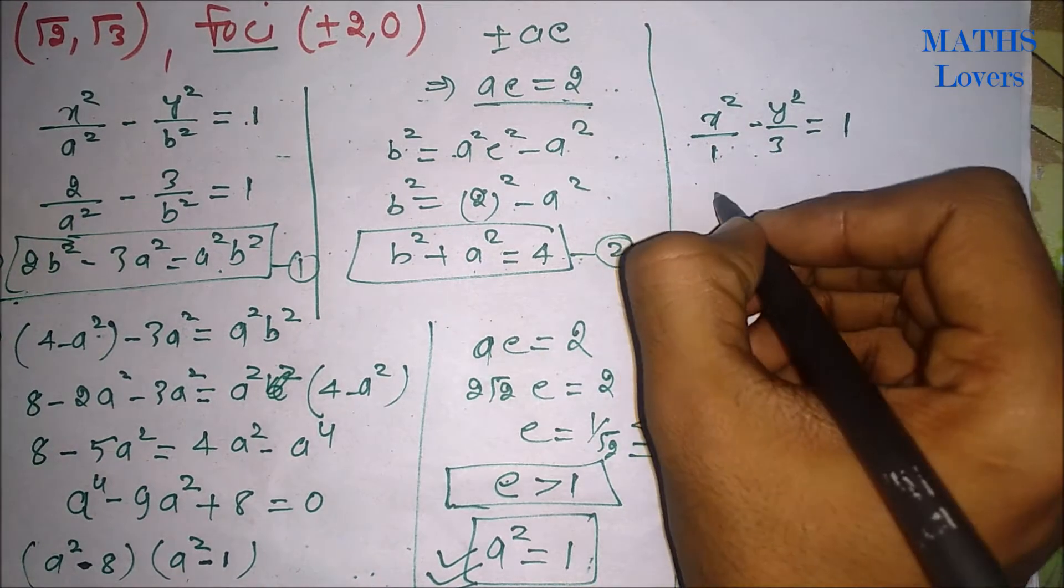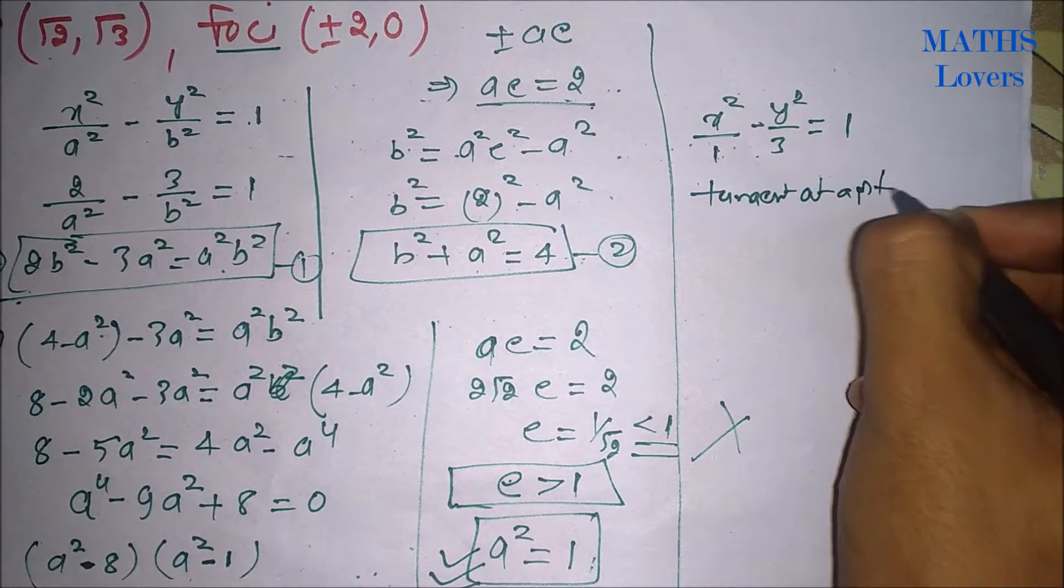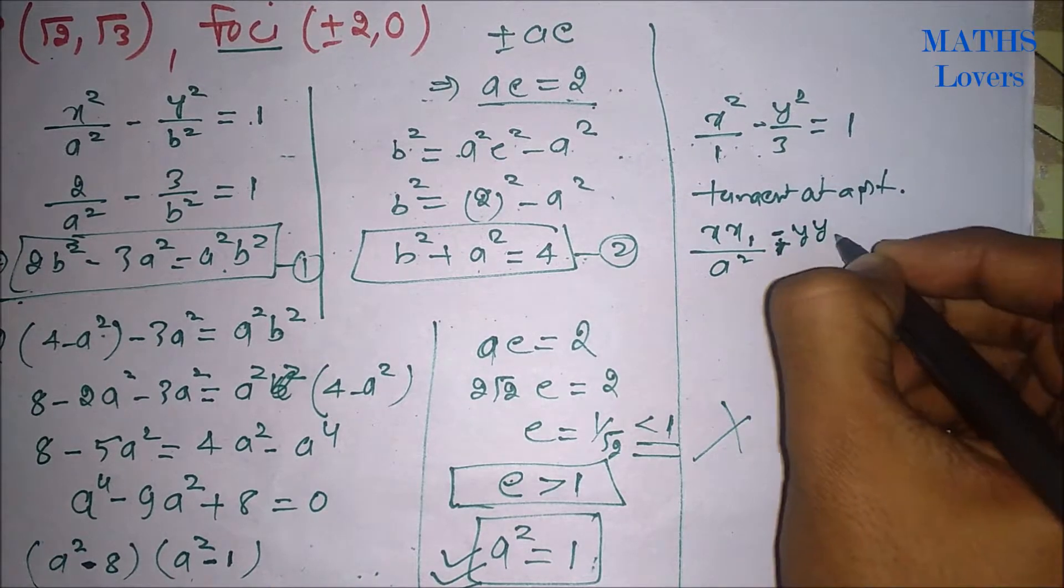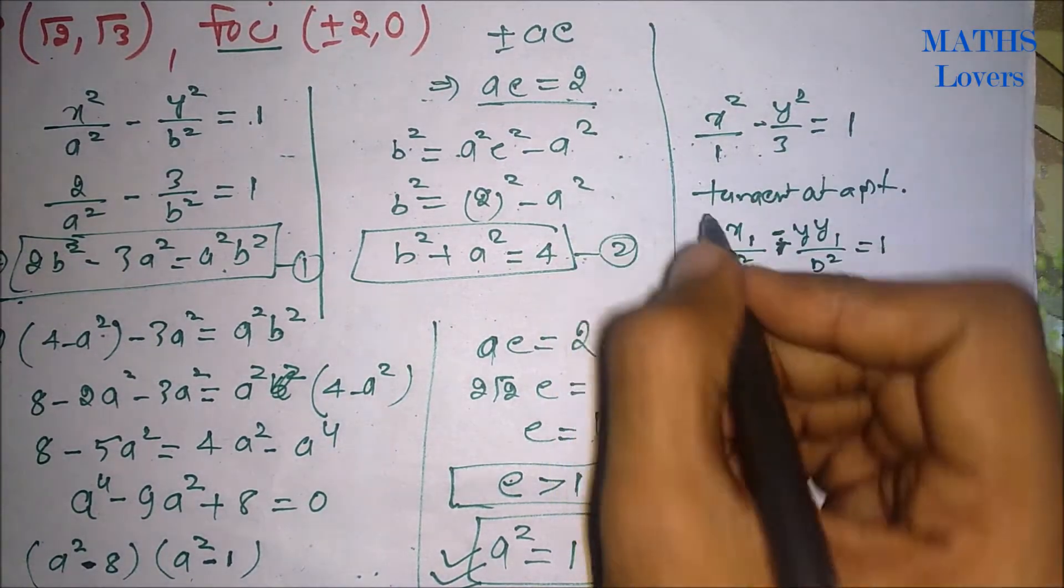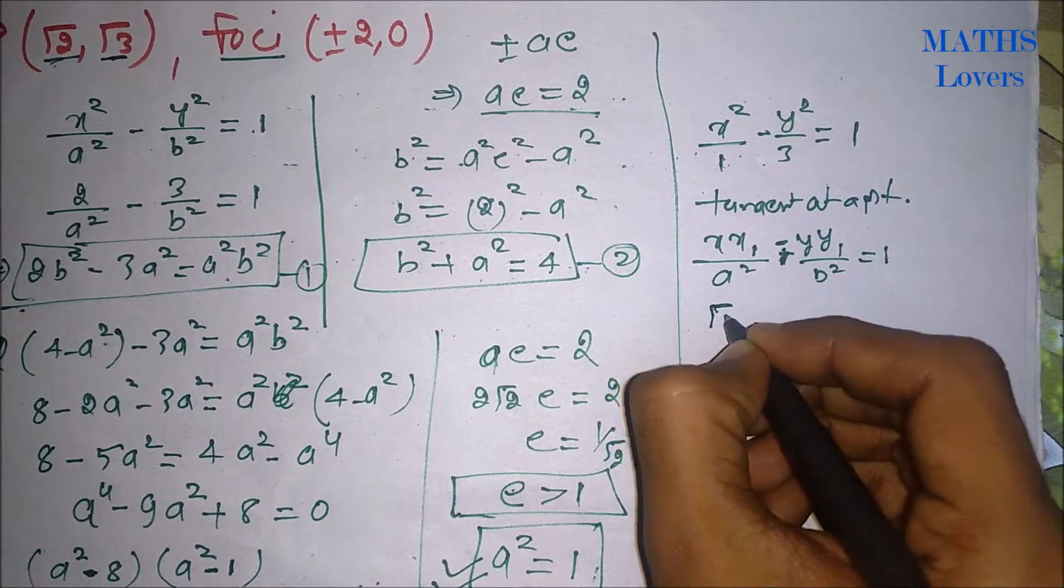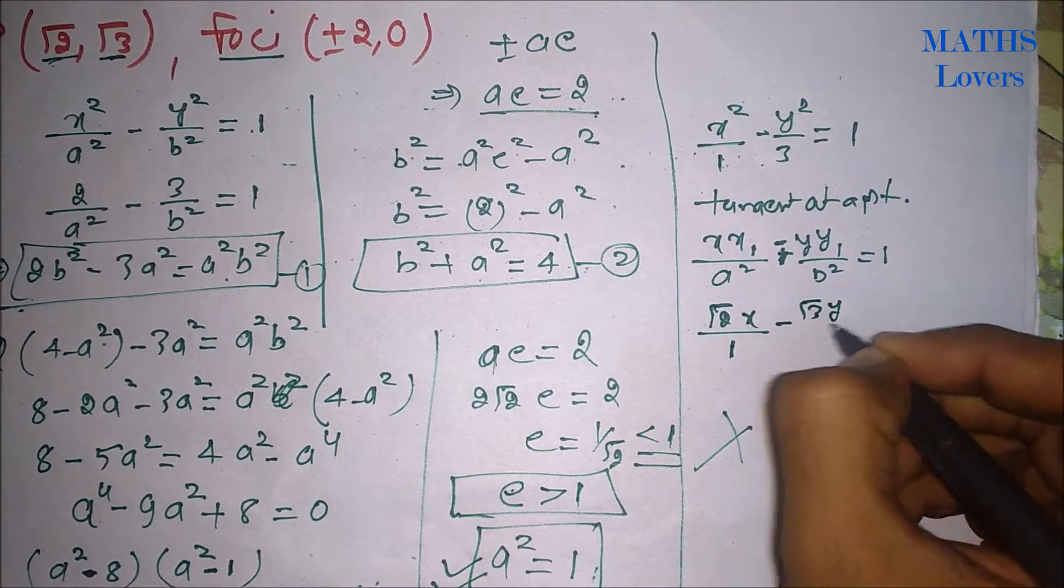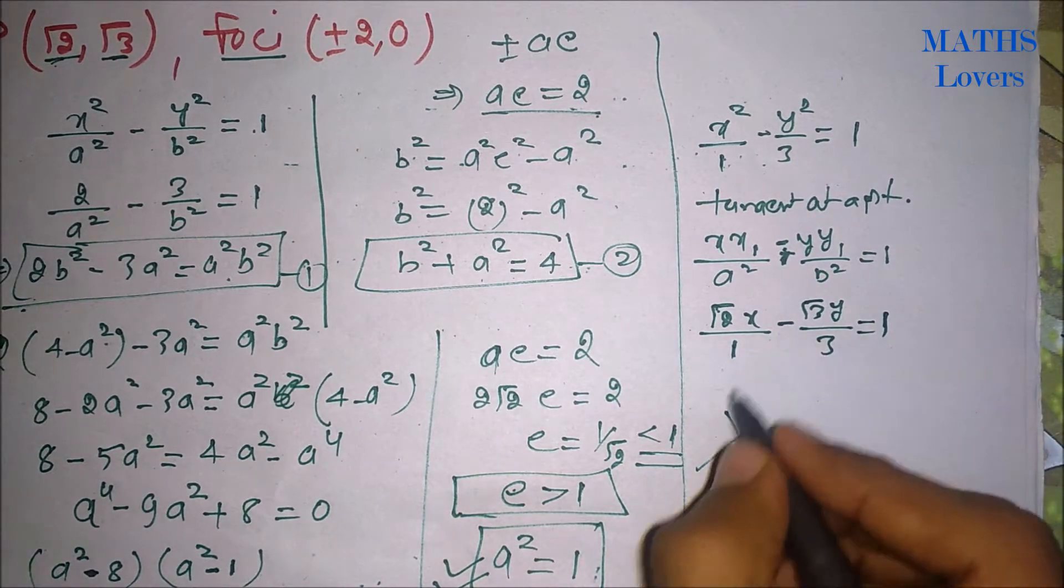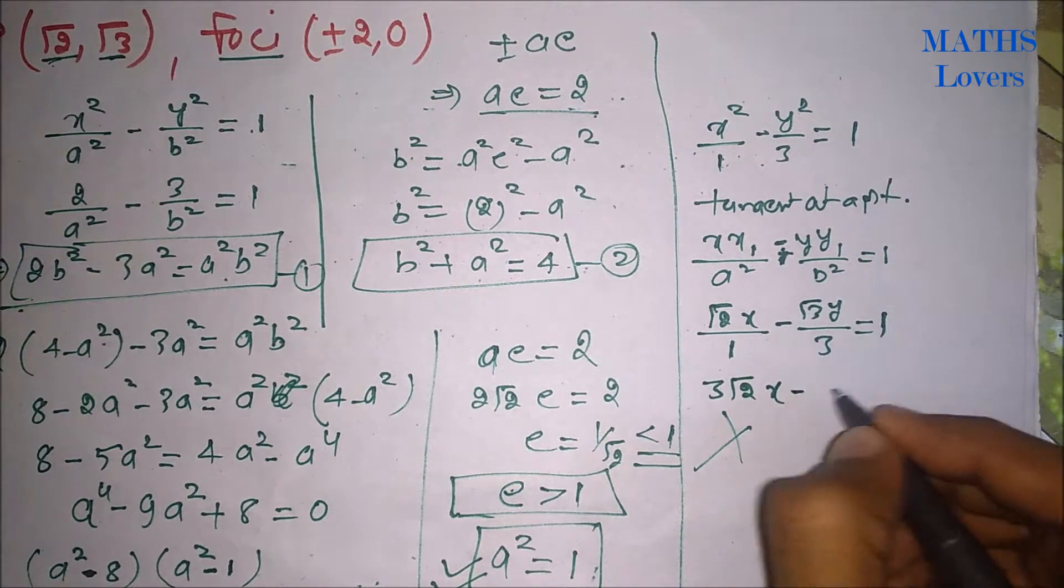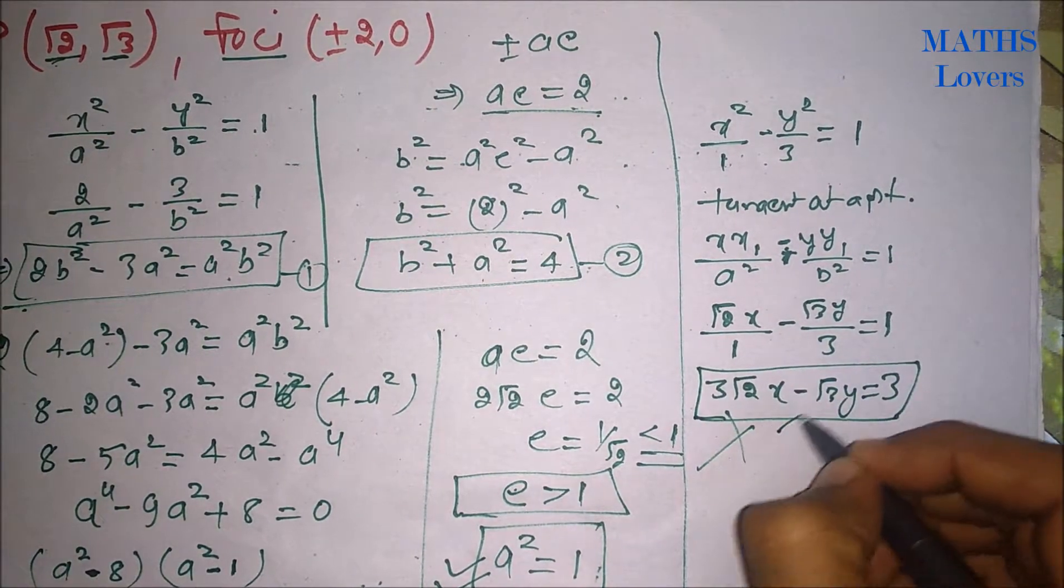So we will put the tangent equation at a point. Tangent at a point is xx₁/a² - yy₁/b² = 1. Here we know that x₁ is √2 and y₁ is √3. We will put here: (√2·x)/1 - (√3·y)/3 = 1. If you cross multiply it, you will get 3√2·x - √3·y = 3. This is our equation for tangent.